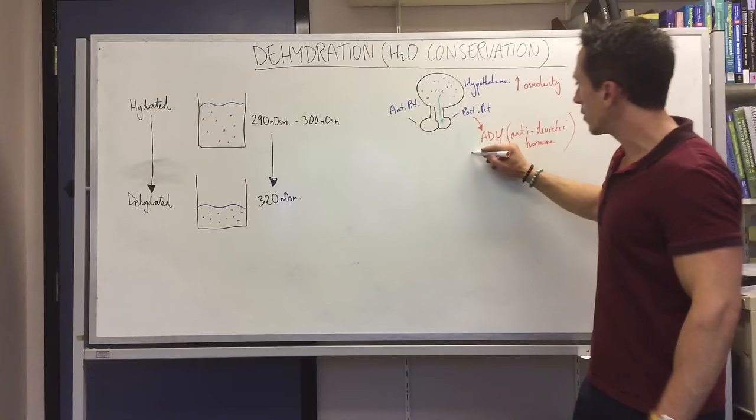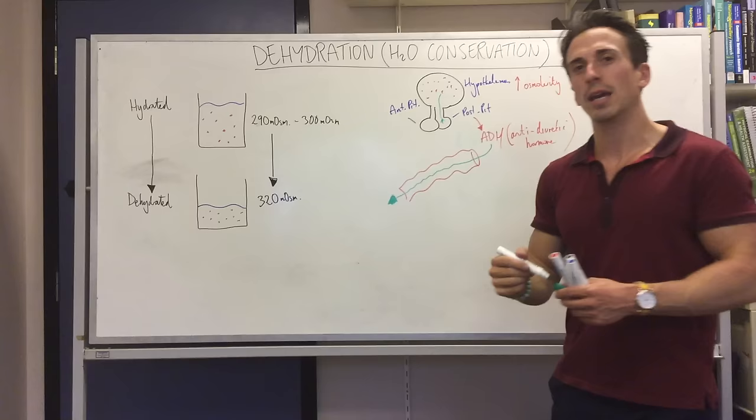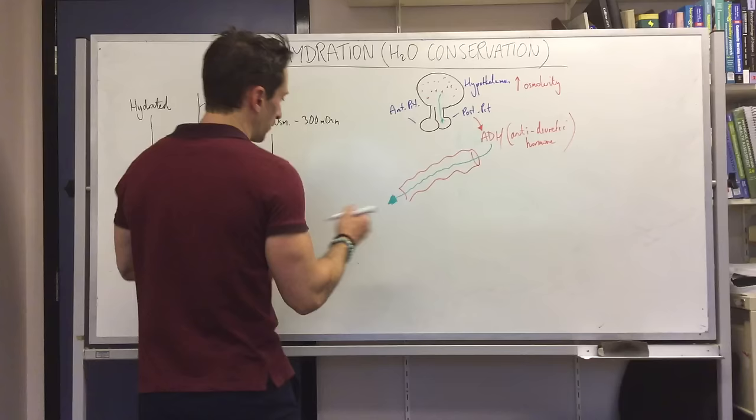Now this antidiuretic hormone which is now in the bloodstream, where does it go to? Well it travels down until it gets to where does blood always ultimately end up: at the kidneys, specifically at the filtration unit of the kidneys, which is the nephron.